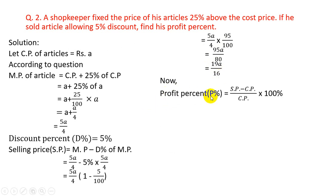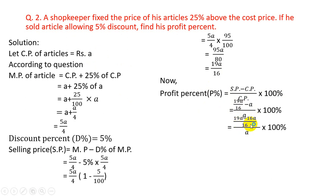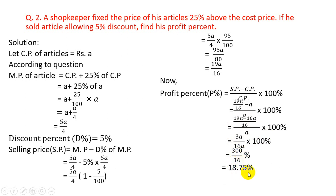Now profit% = (SP − CP)/CP × 100%. Here SP = 19A/16 and CP = A. So profit% = (19A/16 − A)/A × 100% = (19A − 16A)/(16A) × 100% = 3A/(16A) × 100% = 300/16 = 18.75% is the answer.